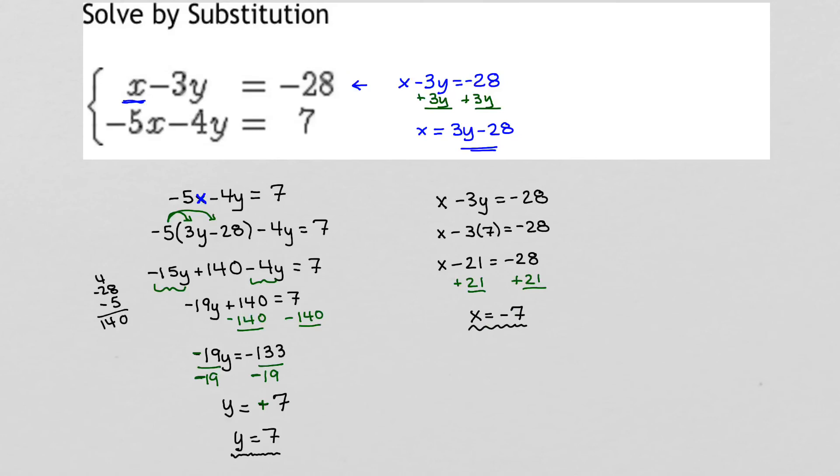Let's check and make sure our work is good. That comes from the first equation. So let's go ahead and check this in the second equation. Negative 5 times x, which is negative 7, minus 4 times y, which is positive 7, equals 7. Let's make sure this is true. 35 minus 28 is 7. Beautiful.